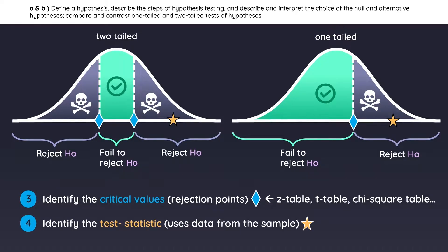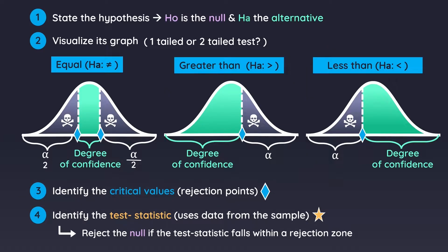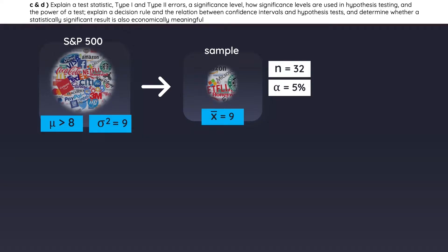If you understand these big picture concepts, the rest of this chapter will be very simple. Here are the steps again — pause the video if you need to review — and let's do a quick example to solidify these concepts. An analyst believes the return on the S&P 500 is greater than 8%. The population variance is 9, and he wants to test this at a 5% level of significance. To support the analysis, he takes a sample of 32 stocks from the population and finds the average return of the sample.